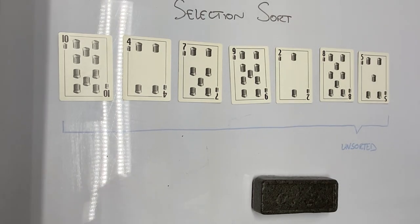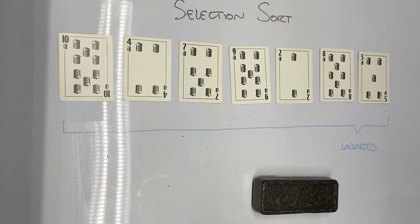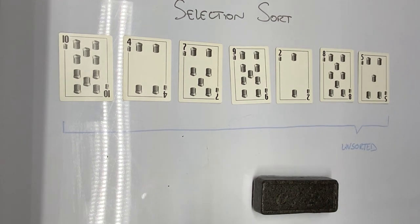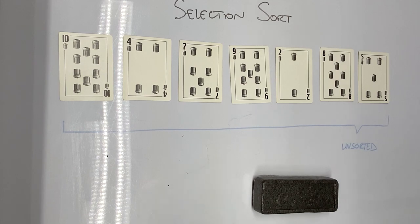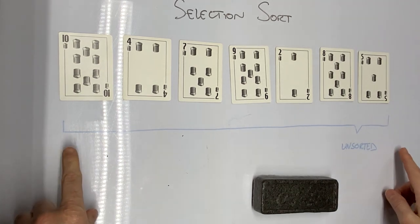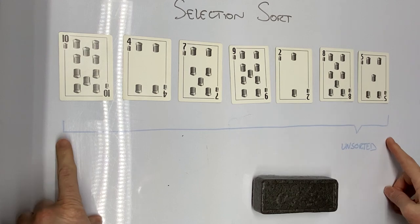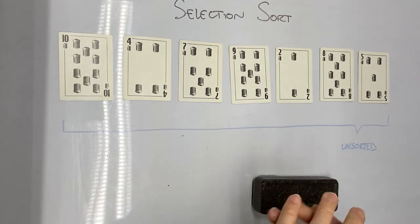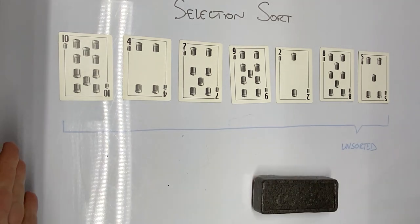The first sorting algorithm we're going to look at is called the selection sort. I've got seven cards here that we're going to sort using this algorithm. I've noted in blue that this is referred to as the unsorted region, which right now contains all seven cards unsorted.